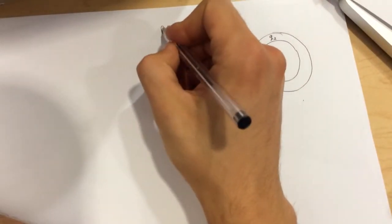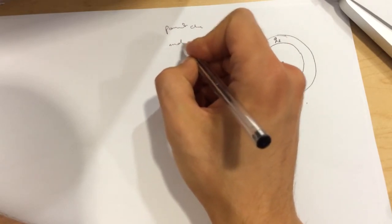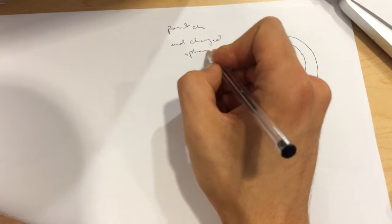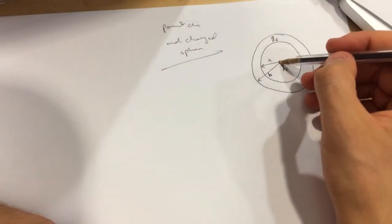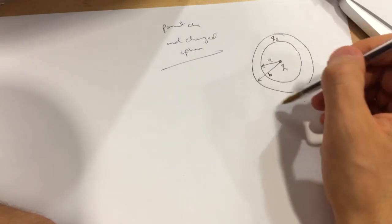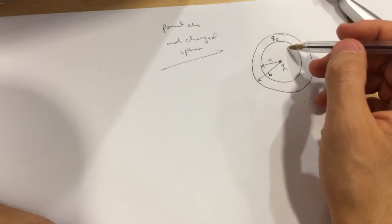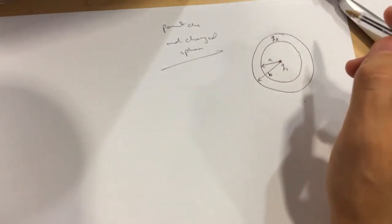Hi guys, this is the point charge and charged sphere problem. We have a point charge in the middle of a charged sphere. There's air here, and I'll draw this. There is a point P here and there's a point R here.